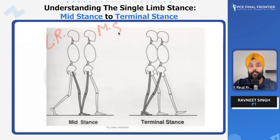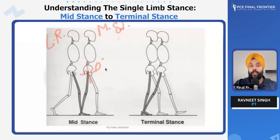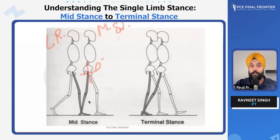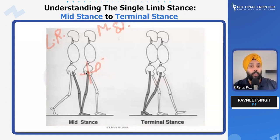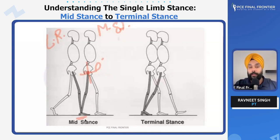This guy right here is in loading response and this guy right here is in mid stance. In mid stance the hip is zero degrees — the hip is completely neutral — because it's the transition of the pelvis and the transition of the other leg going forward. This leg is completely fixed with the ground.